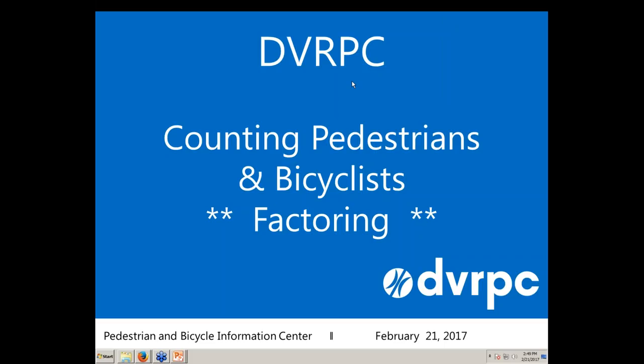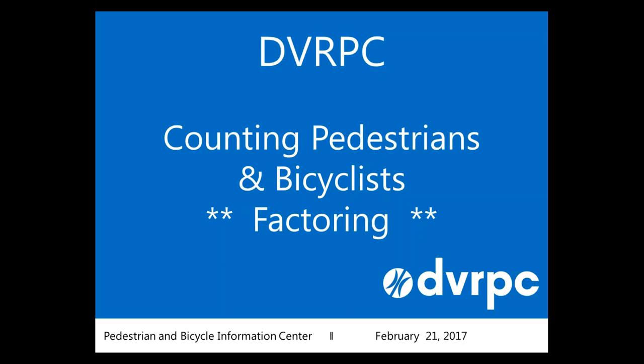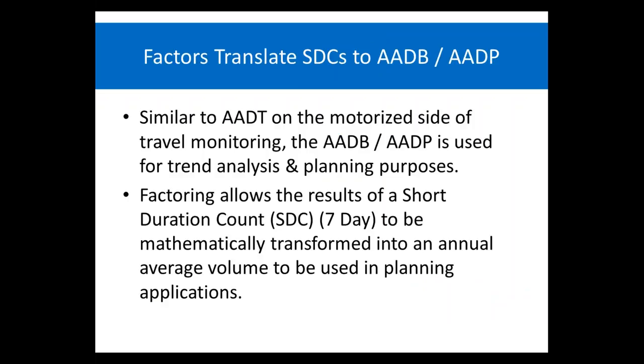Thanks, Dan. I'm going to go into a little more detail about the factoring process. Why do we use factors? As Kristen pointed out, factors are used to translate short duration counts to AADBT and AADPT. On the motorized side we have AADT; AADBT and AADPT are used for trend analysis and planning purposes on the non-motorized side. Factoring allows the results of a seven-day short duration count (SDC), as recommended by the Traffic Monitoring Guide, to be mathematically transformed into an annual average volume for use in planning applications.